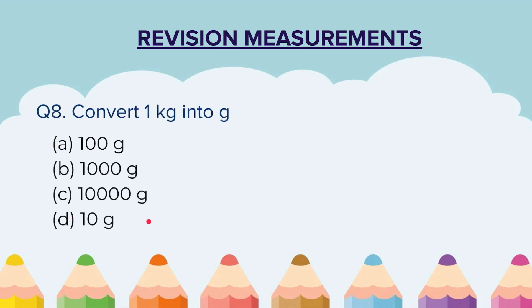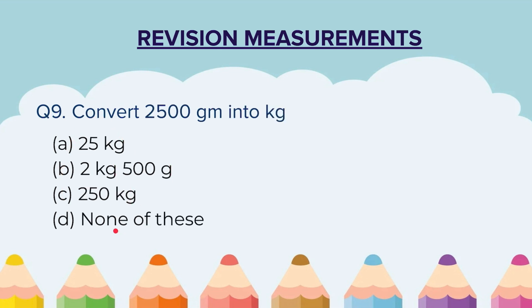Question 8: Convert 1 kg into grams — choose the correct option from the 4 given. Question 9: Convert 2500 grams into kg — again you have 4 options, choose the correct one.